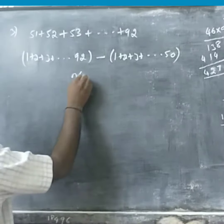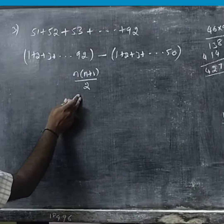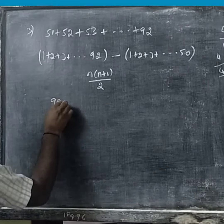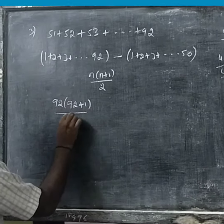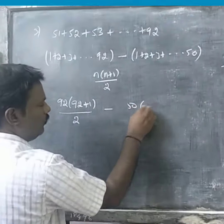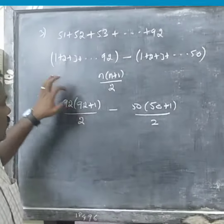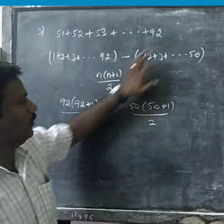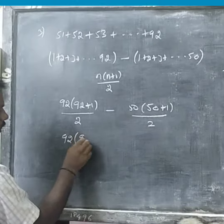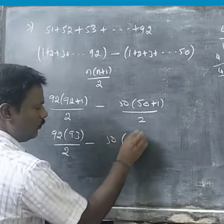So you can use 1 plus 2 plus 3. Now we can use the formula n(n+1)/2. Now we apply this formula here. n is 92: apply the formula — 92 into 92 plus 1, divided by 2. Then n is 50: 50 into 50 plus 1, divided by 2. That gives 51 by 2.